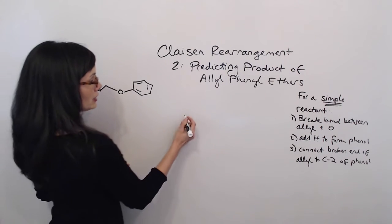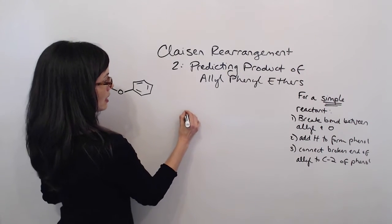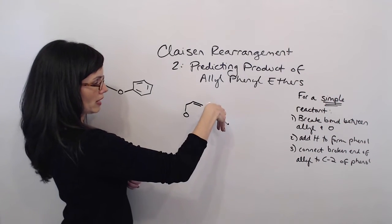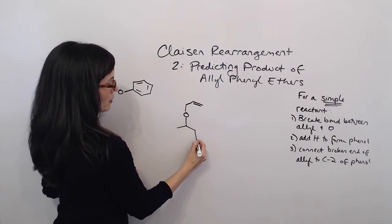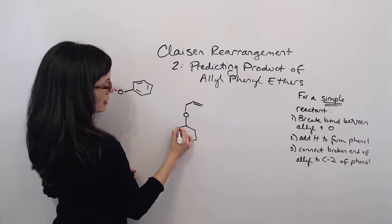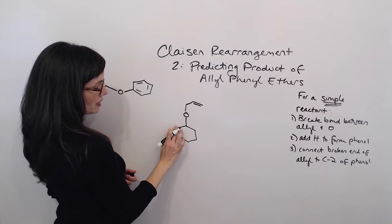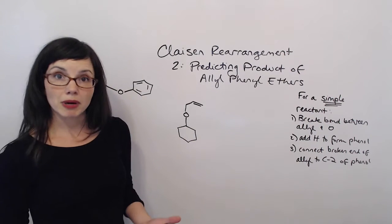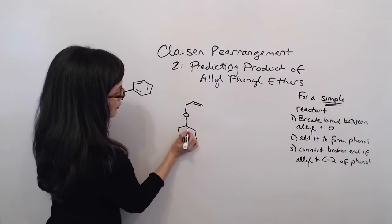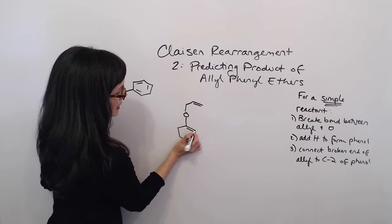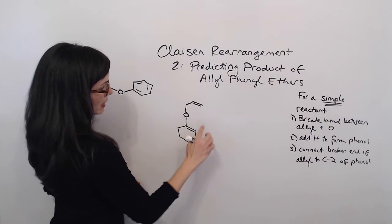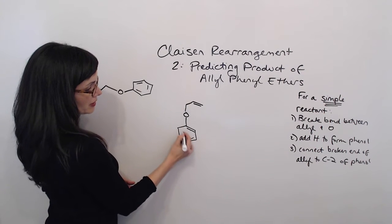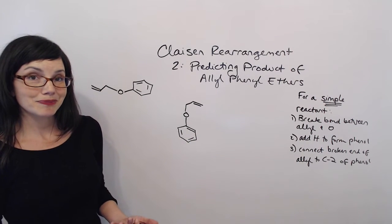We want to put the allyl group at the top and kind of stretch it over to the right. Then we want to put our phenyl group down at the bottom. And it's always a good idea when we're putting in our double bonds to put the first double bond here at the top right, so that it can interact with this double bond on the phenyl, because those two are going to be reacting with each other.